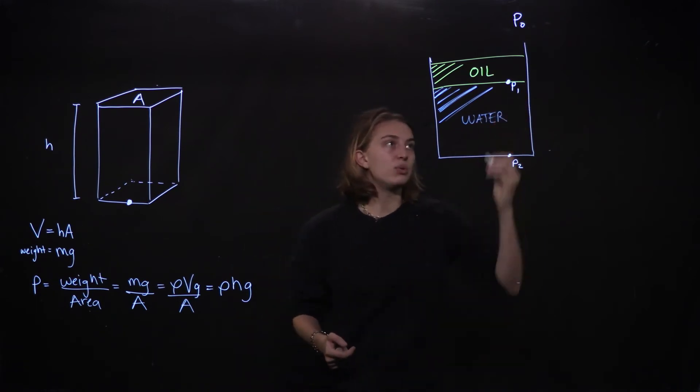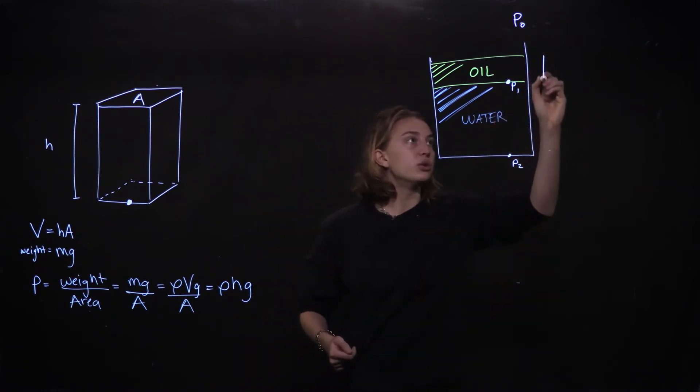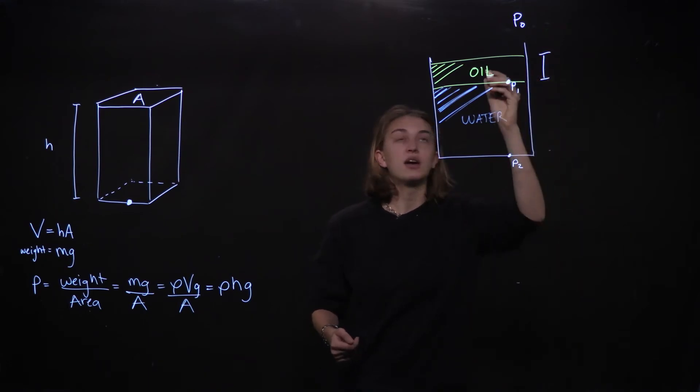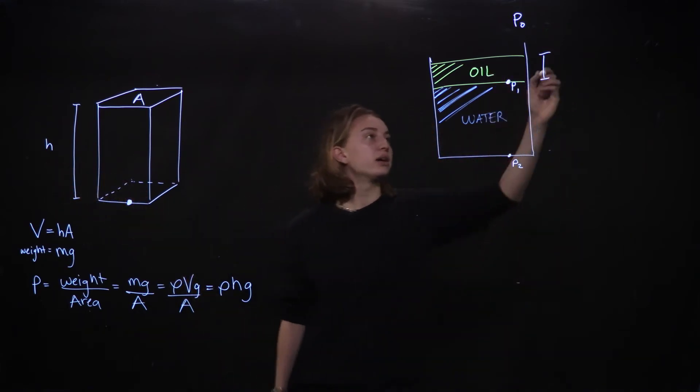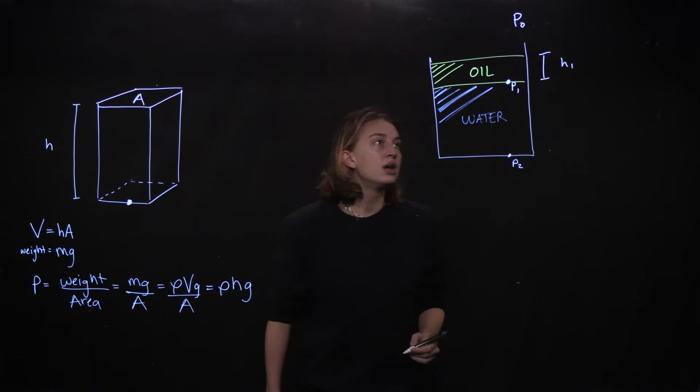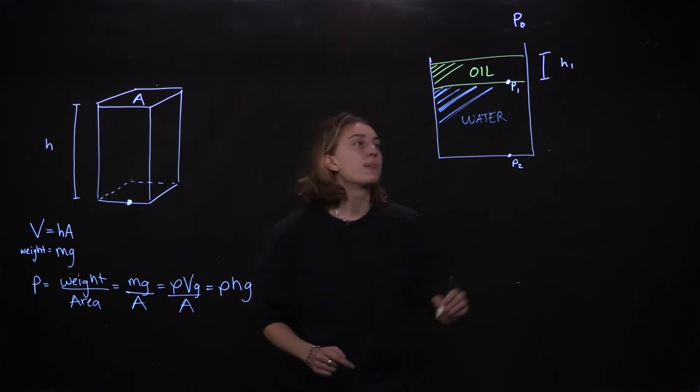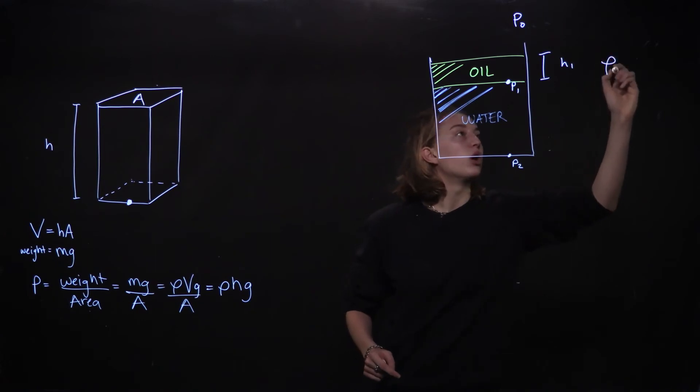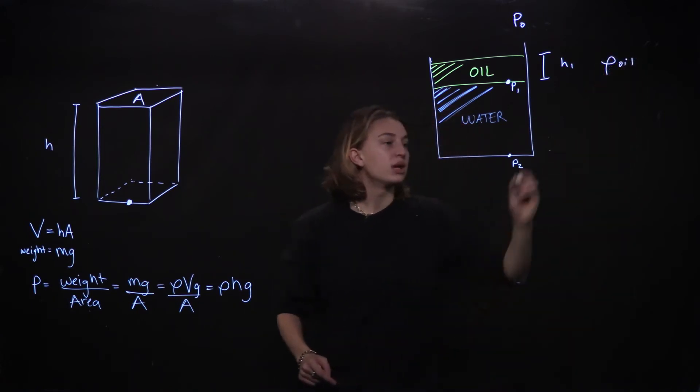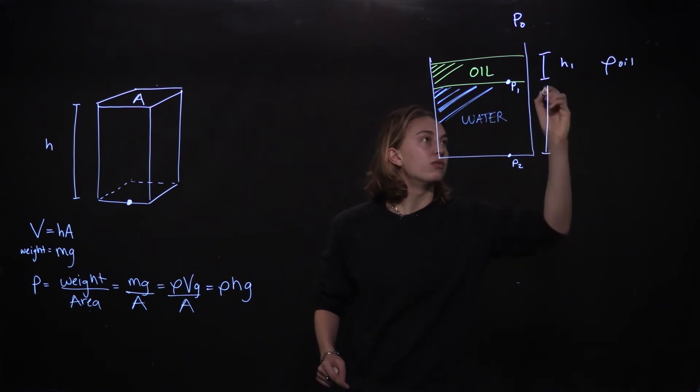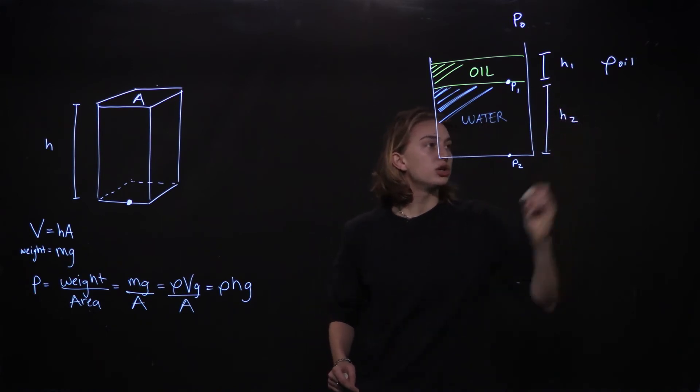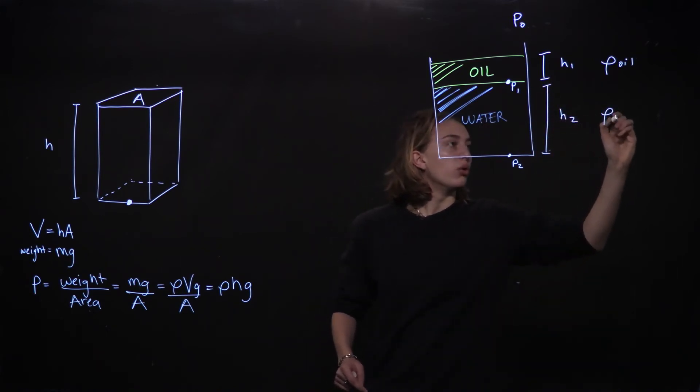So when we're thinking about P1 we need to understand the height of this column of oil like I had here and I'm going to call that H1. And we also need to know the density of this column of oil which I'll call rho oil. The same goes for this column of water H2 rho water.